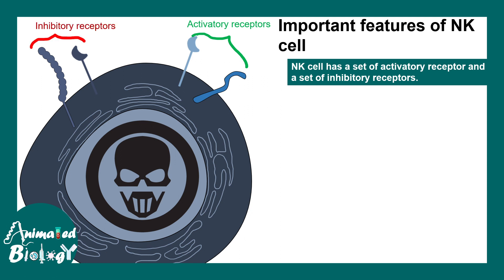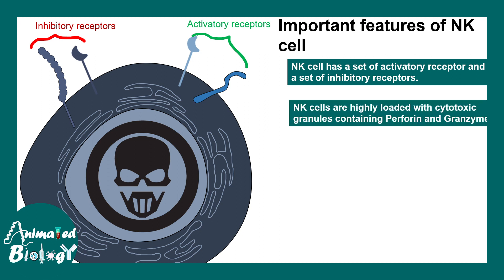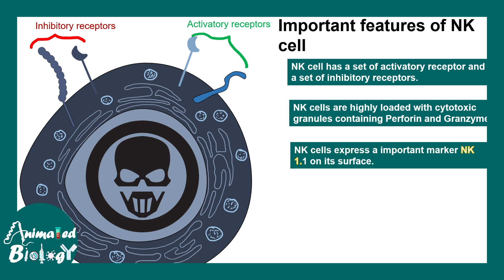Activatory receptors allow NK cells to engage with a certain cell type or an infective agent, such as bacteria. But inhibitory receptors prevent this kind of response. NK cells are highly loaded with cytotoxic granules filled with perforin and granzyme, just like a cytotoxic T cell.